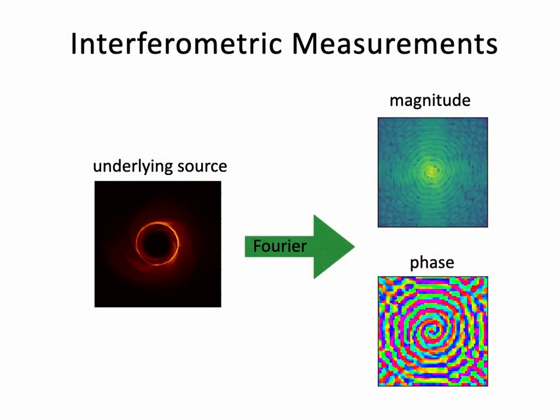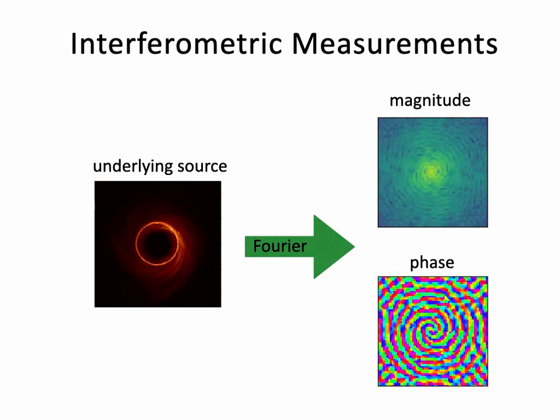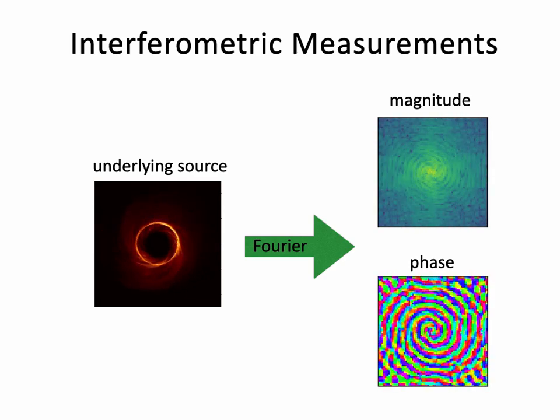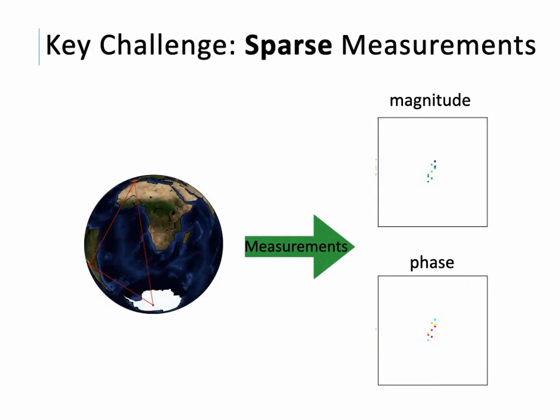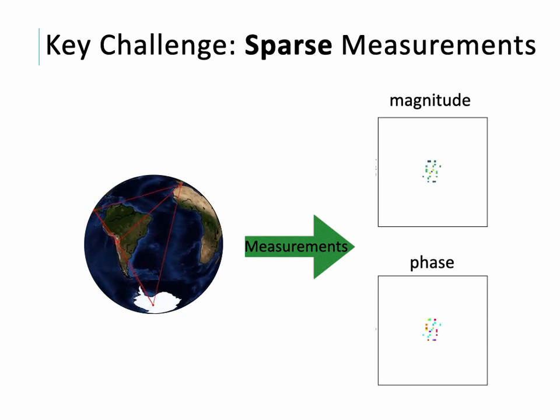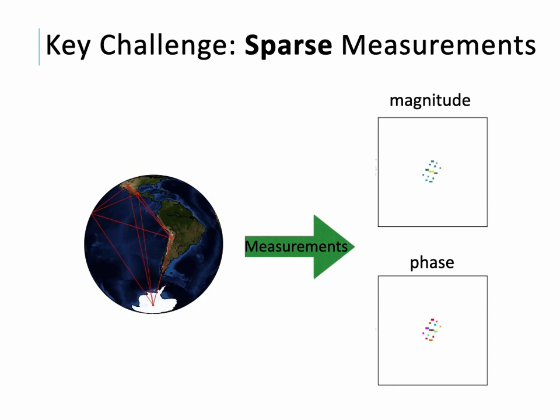Images from the Event Horizon Telescope are reconstructed from interferometric measurements. These measurements relate to the underlying source through its Fourier transform. A key challenge is that we are only able to measure very few spatial frequencies while the source is evolving.